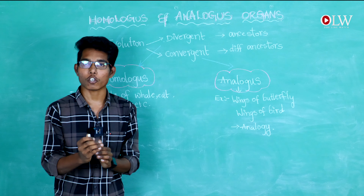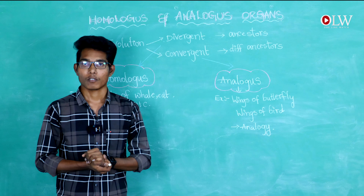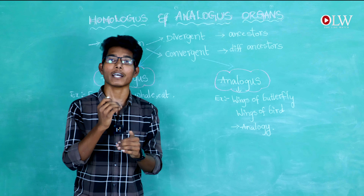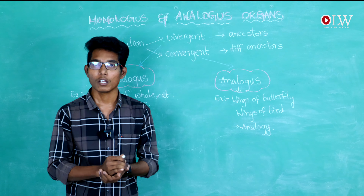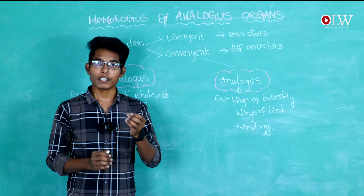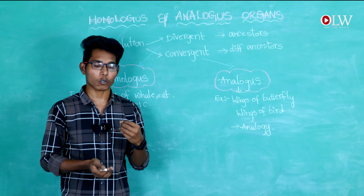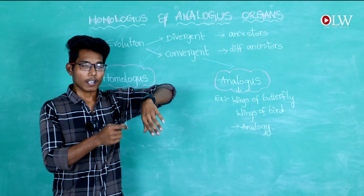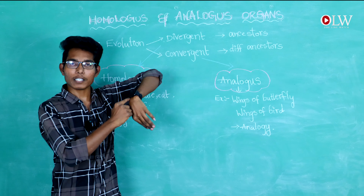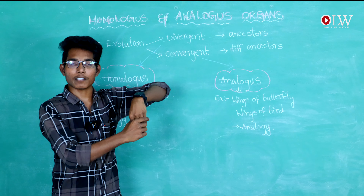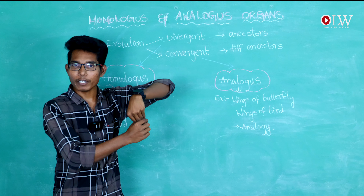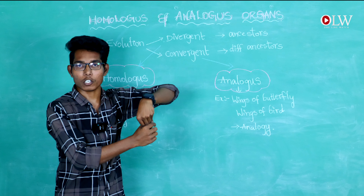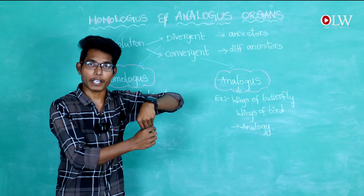The following generations continue from those two ancestors, and further generations arise from the next generation. In homologous organs, we know about the vertebrate appendages of a human hand — there are many bones present in the human forelimb. When we observe the forelimb of a horse or the flippers of a whale, the same evolutionary changes occur in these organisms.